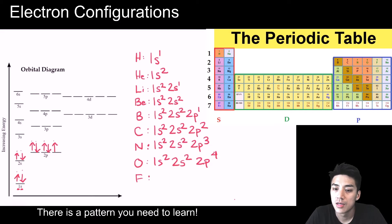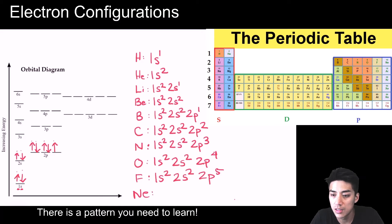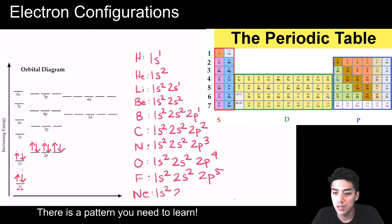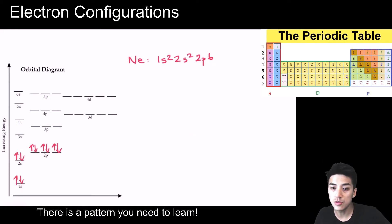Fluorine has nine electrons: 1s2, 2s2, 2p5. Neon has ten electrons: 1s2, 2s2, 2p6. We left off on neon: 1s2, 2s2, 2p6.